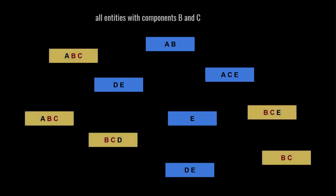Each box in this diagram represents a chunk and each letter a component type. The chunks may be scattered throughout memory, but the entity IDs and components within each chunk are stored tightly packed. To loop through all entities with both B and C components, we'd touch five chunks. In other cases, we might visit entities with B and C but only access C components. We can also exclude component types — to access chunks with B and C but not A, we'd access just three chunks.